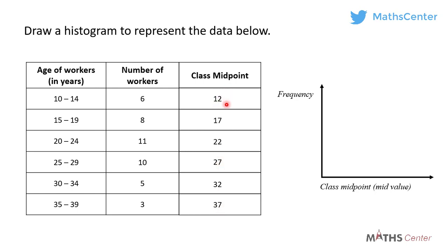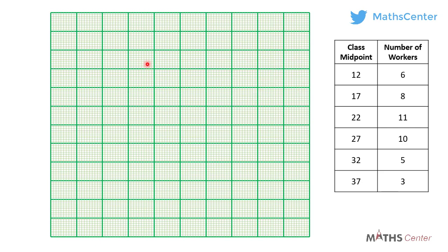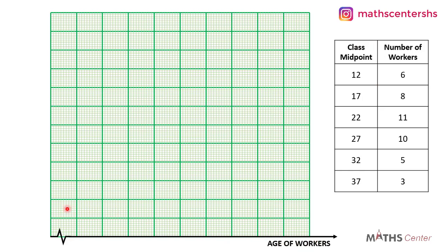We now have the class midpoints for all the different intervals. We are going to have the class midpoints on the horizontal axis and the frequencies, which is the number of workers, on the vertical axis. Now let's draw the histogram on the graph sheet. The class midpoint starts from 12, so on the horizontal axis I will begin the numbering from 12. I'll use a break sign to show that the part of the scale before 12 has been cut off.